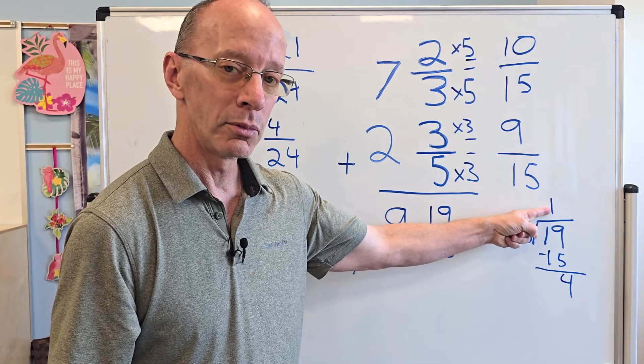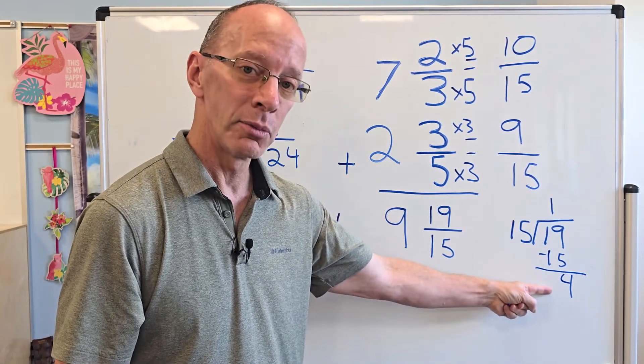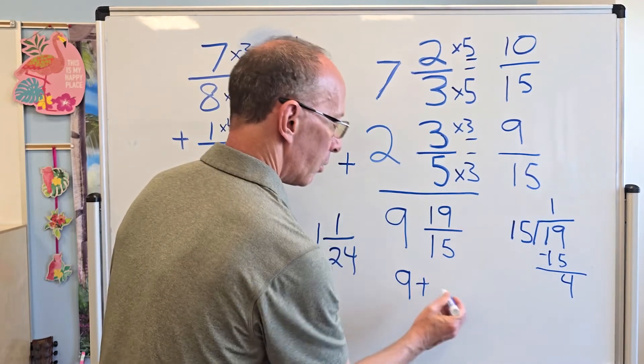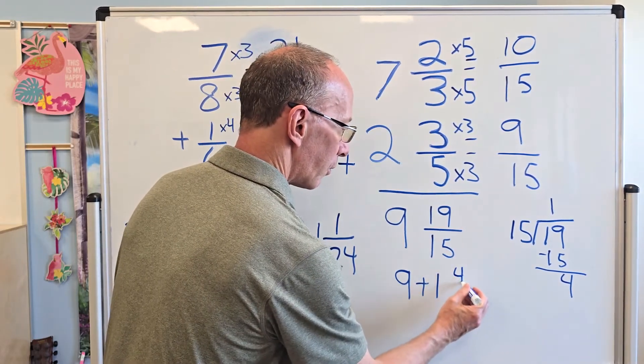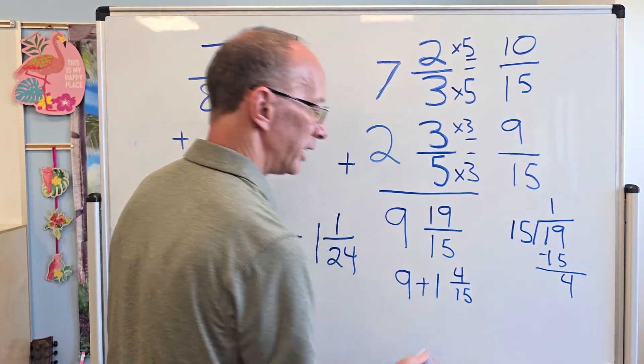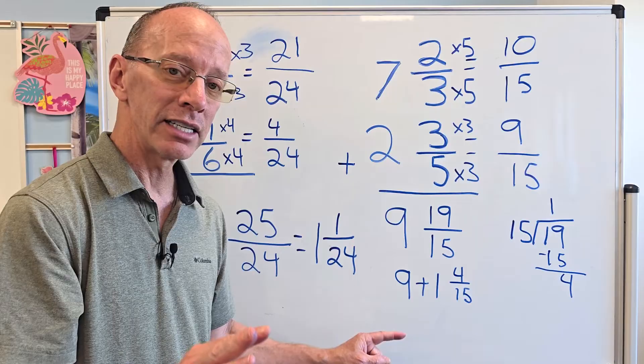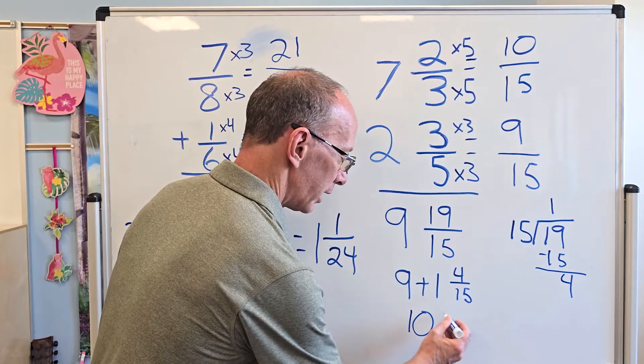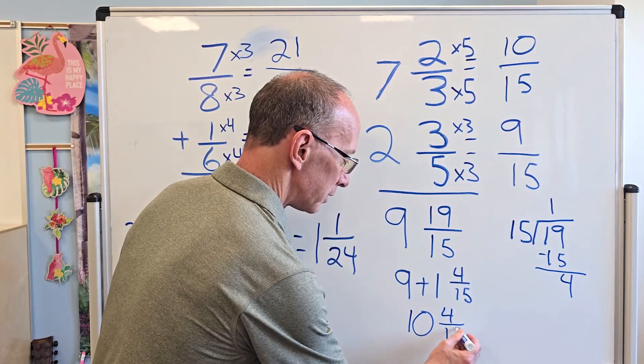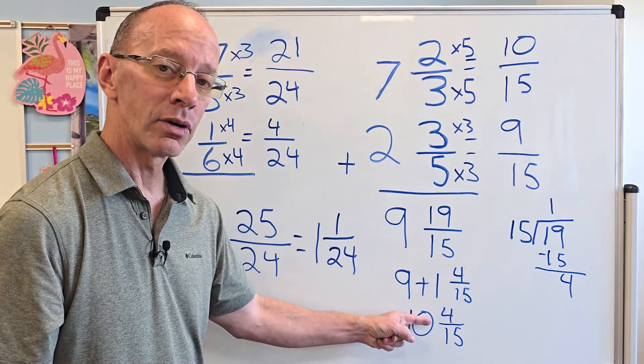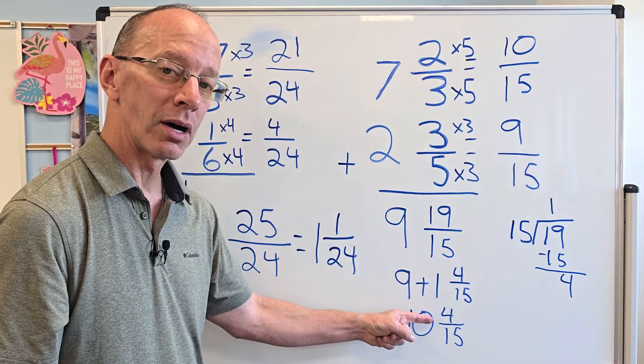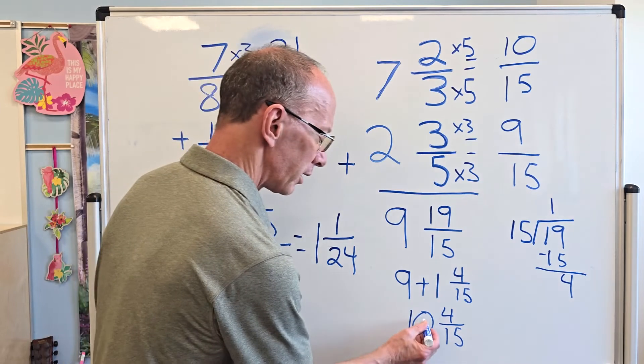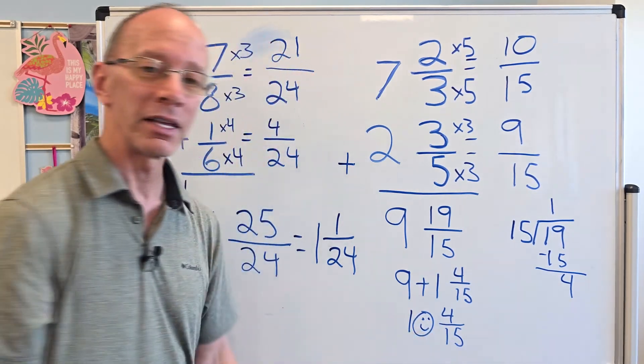So I'm going to rewrite that. Remember, this is my whole number. This is my numerator and this is my denominator. So I'm going to go 9 plus 1 and 4 fifteenths. Now I'm still not done yet. I need to add 9 plus 1 equals 10 and then 4 fifteenths. Can I simplify 4 and 15? You can't. Is the numerator smaller than the denominator? It is. There it is. If you want to do anything more, you can just draw a little smiley face right here. And there you go. Have a happy day.